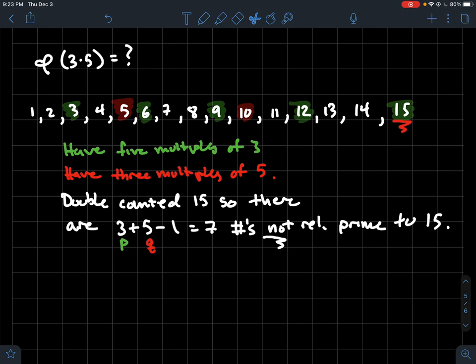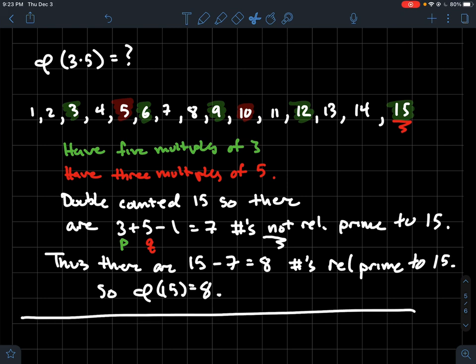So now think about, if I want to know how many numbers are relatively prime to 15, do total minus how many aren't. And that's the last step. Total is 15 minus how many there aren't, 7. You get 8. Thus, there's 8 numbers that are relatively prime to 15. In other words, phi of 15 is equal to 8.